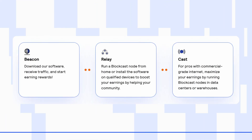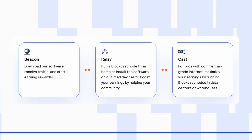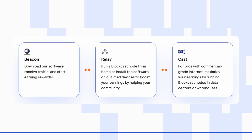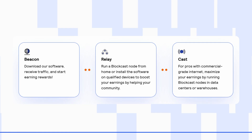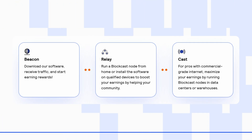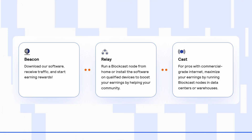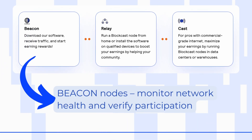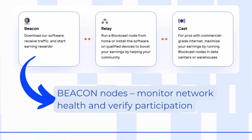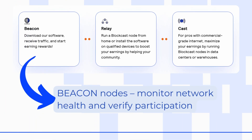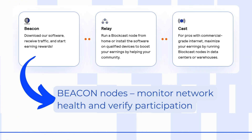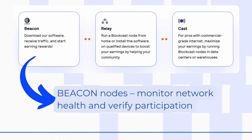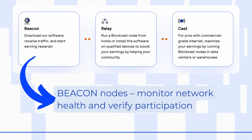For BlockCast to work there are three different types of nodes: Beacon, Relay, and Cast nodes. Beacon nodes monitor network health and verify participation. This is the node I'll show you how to set up in this video.